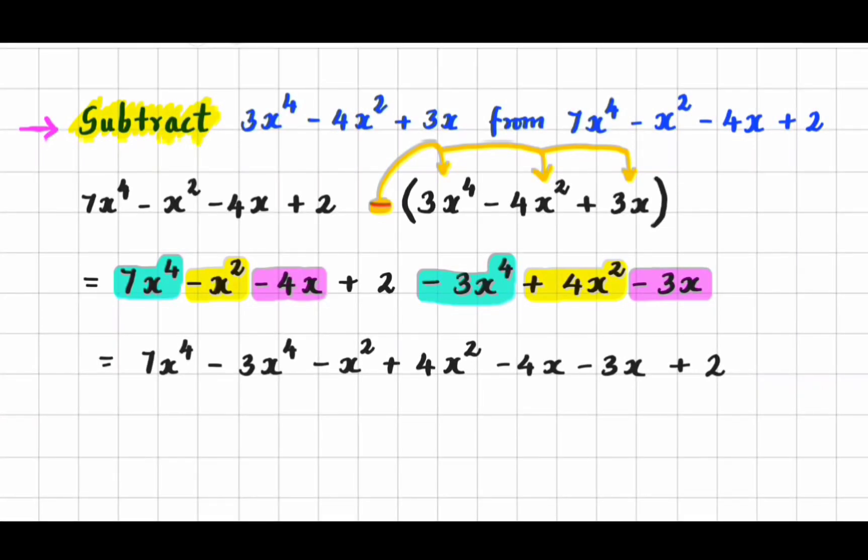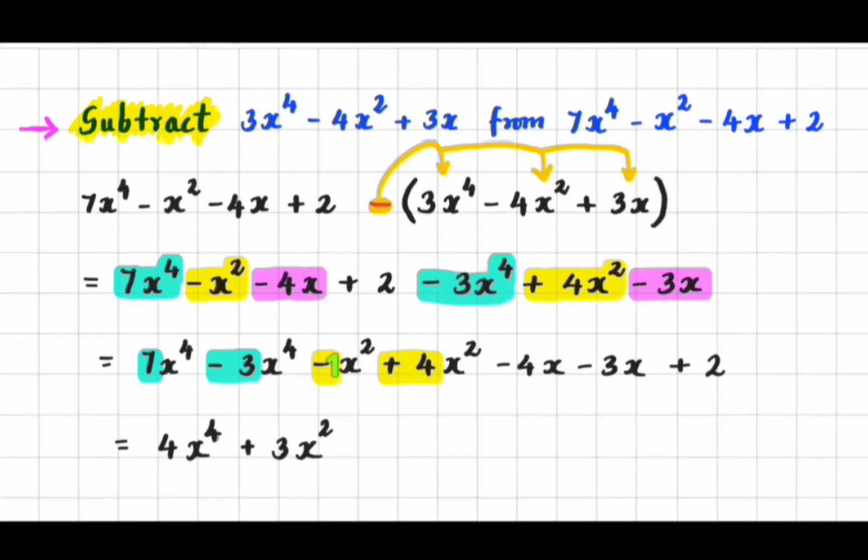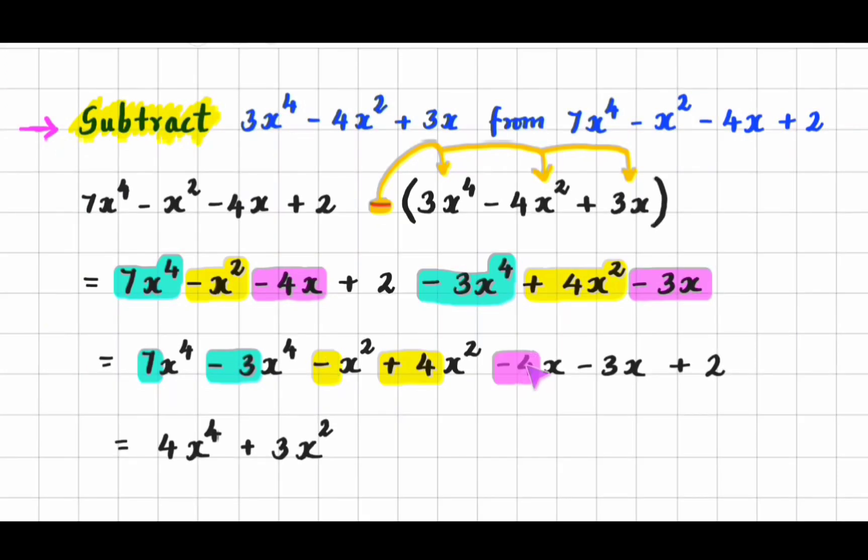Step 2: Add or subtract like terms. Here, 7x to the power 4 minus 3x to the power 4 equals 4x to the power 4. Minus x squared plus 4x squared equals plus 3x squared. Minus 4x minus 3x equals minus 7x. And left over is plus 2.